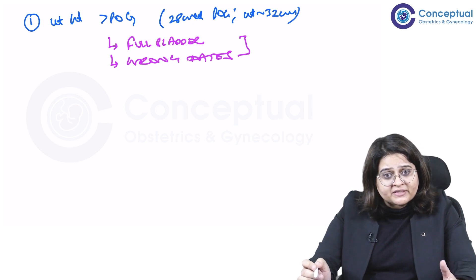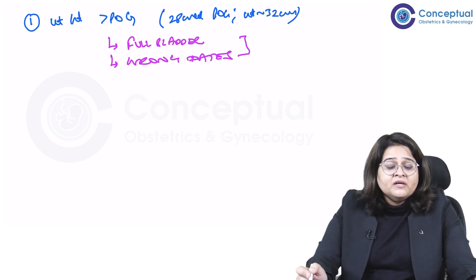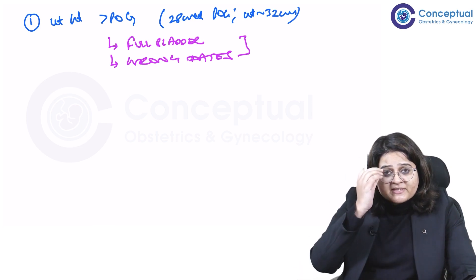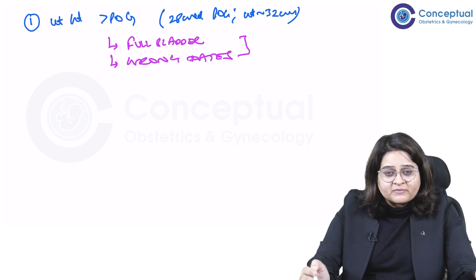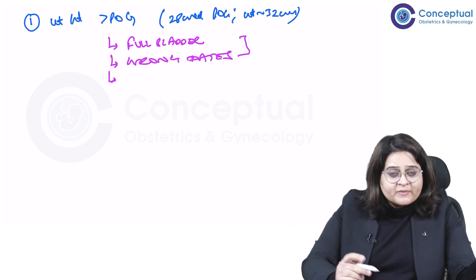These are the first two things that can cause a finding of uterine height more than the POG. So recalculate her dates, reconfirm her LMP, check whether she has a first trimester scan, corroborate the current POG with her first trimester scan.